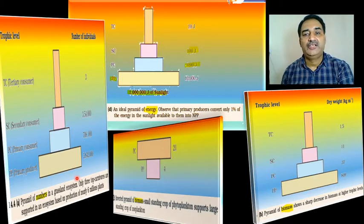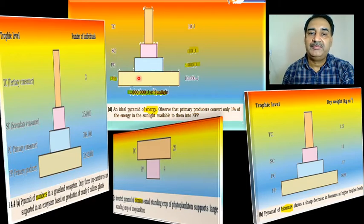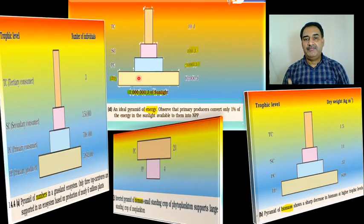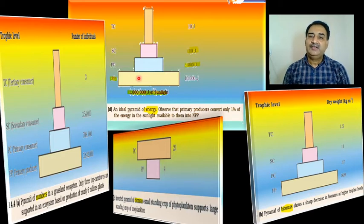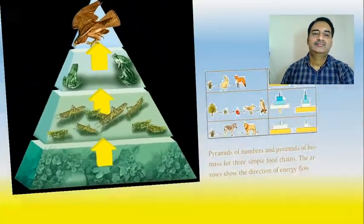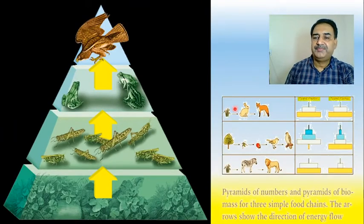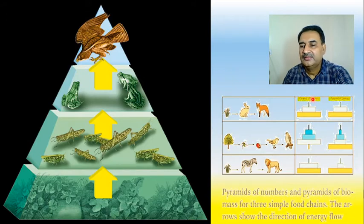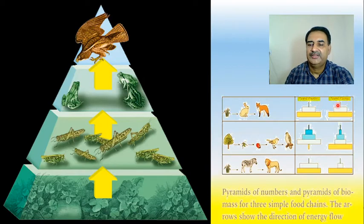An important point to remember: energy pyramid is always upright, whereas number pyramid and biomass pyramid may be upright or downward depending upon the nature of the ecosystem. This is the number pyramid, and this is the energy pyramid, and this is the biomass pyramid.